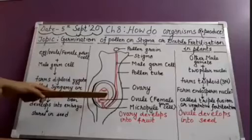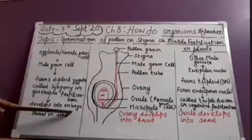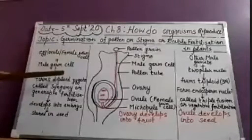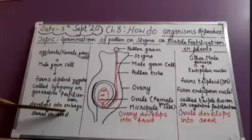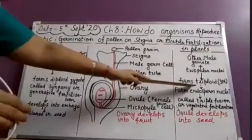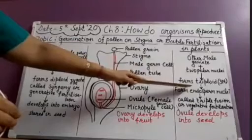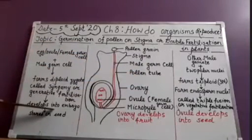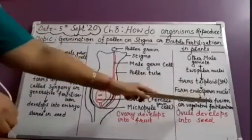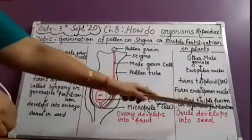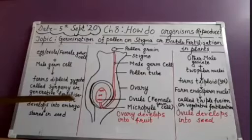This endosperm nuclei gives nourishment to the growing zygote as it develops into the embryo. Because the male and female germ cells in plants are very small, they need nourishment to grow into the embryo. This nourishment is provided by the triploid — that is, two polar nuclei and one male gamete when they fertilize. This endosperm nuclei formation is called triple fusion, and it is also known as vegetative fertilization.